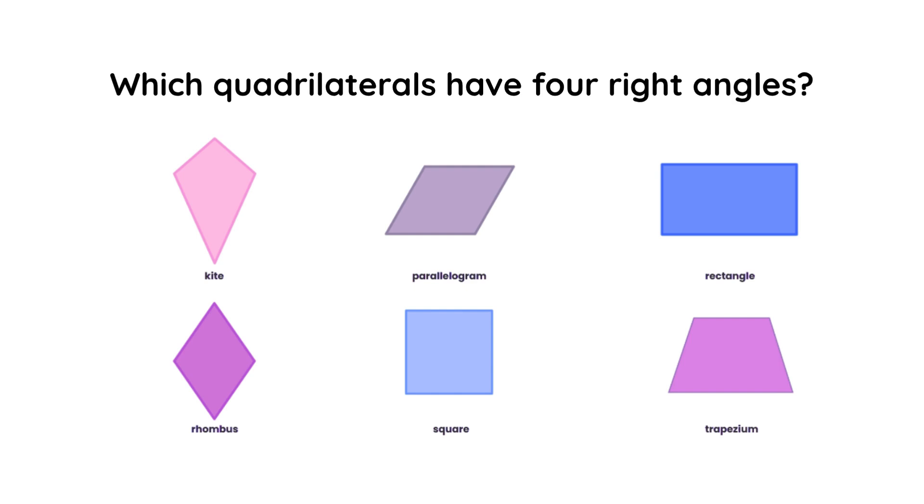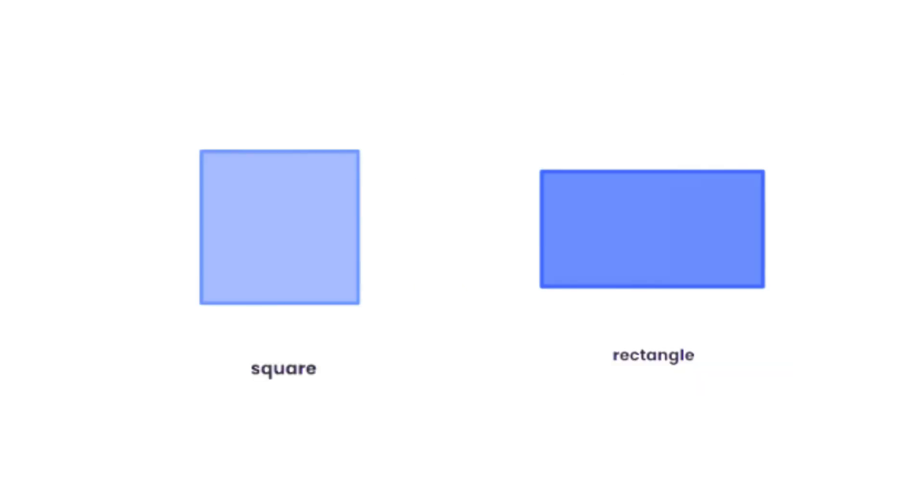Which quadrilaterals have four right angles? The answer is square and rectangle.